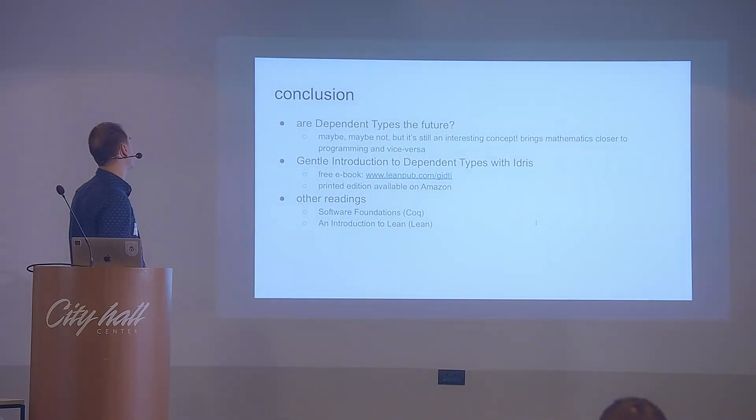So, that's for the demo, and the conclusion is now that are dependent types the future. Really, there are other ways to prove software correctness. It's not the only way. There is a programming language developed by Microsoft Research called Daphne. It's working on a completely different logic, not type theory, but a whole different theory. It's based on Hoare logic. And really, you could use that to prove properties about your program.